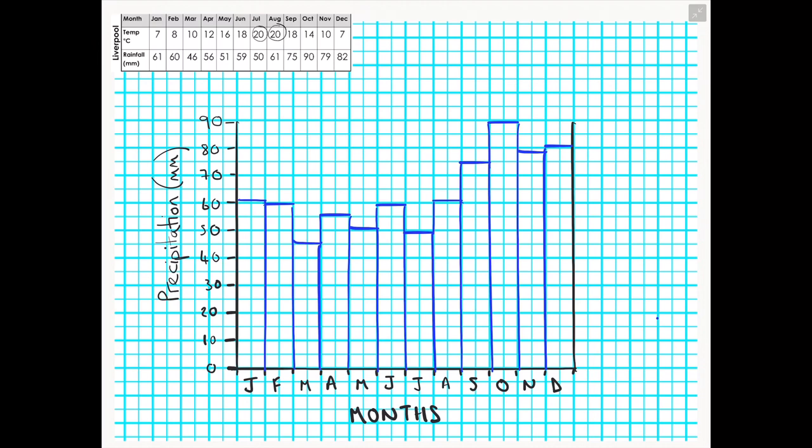We can now move on to the right-hand side of our axis by beginning to plot temperature. As you can see, I have referred to my data and I have circled the maximum value for the temperature of Liverpool, which I need to go up to on my right-hand axis on my climate graph.